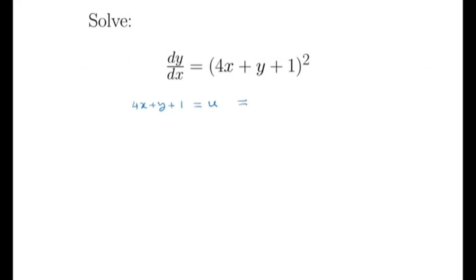So by taking the derivative of both sides with respect to x, we get that 4 + dy/dx = du/dx. So from here we have dy/dx = du/dx - 4.